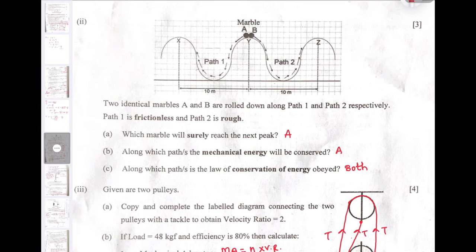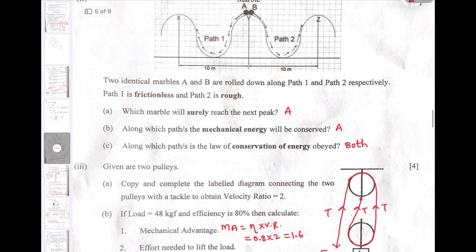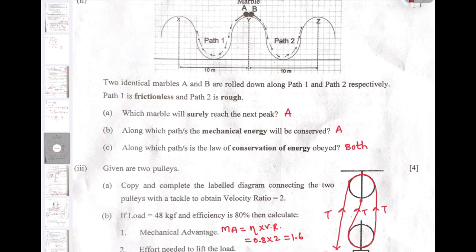Next: Two identical marbles A and B are rolled down along path 1 and 2 respectively. Path 1 is frictionless and B has friction, so it is a rough path. Which marble will surely reach the next peak? The answer is of course A because that marble is moving on frictionless path. Along which path the mechanical energy will be conserved? That is again path A because it is frictionless. And along which path the law of conservation of energy is obeyed? Law of conservation of energy is obeyed irrespective of whether there is friction or not on the given path.